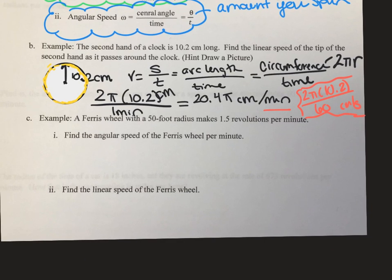Okay, let's try the next one. So the next one says, I'm going to have a Ferris wheel with a 50-foot radius that makes 1.5 revolutions per minute. The first thing I want to do is find the angular speed. So again, omega, this funny Greek letter, it looks like a W, it's called omega, is going to equal theta, my angle that I make, over time.